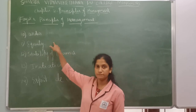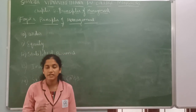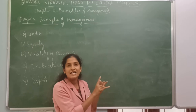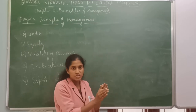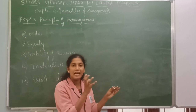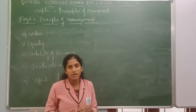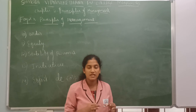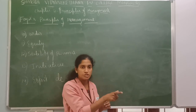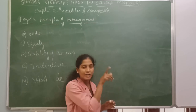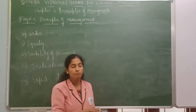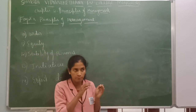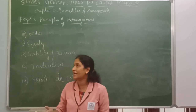The tenth principle is order. Fayol tells that order should be maintained. Order means keeping all materials and men orderly arranged so that they can do the work efficiently and production will increase. There should not be wastage of time in searching for things. Everything should be arranged in a proper place. Orders must be maintained so that there will be discipline, and people should sit and work properly.